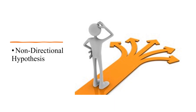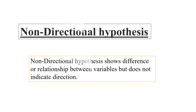Now let's move forward toward the non-directional hypothesis. As you can see from the picture, there is no certain direction — one is unsure which way or which direction to move. Non-directional hypothesis shows difference or relationship between variables but does not indicate the direction.